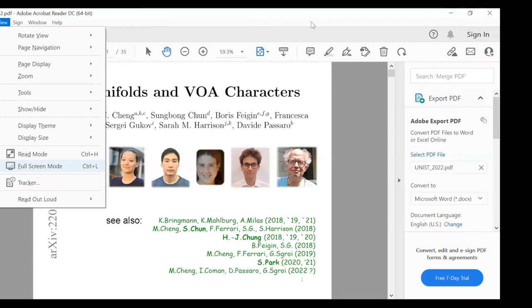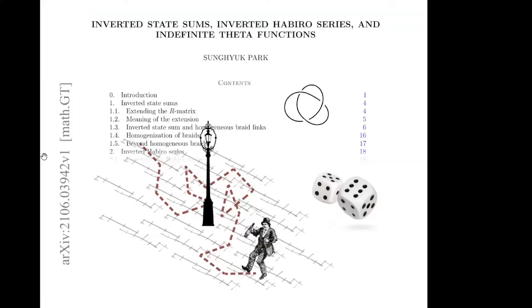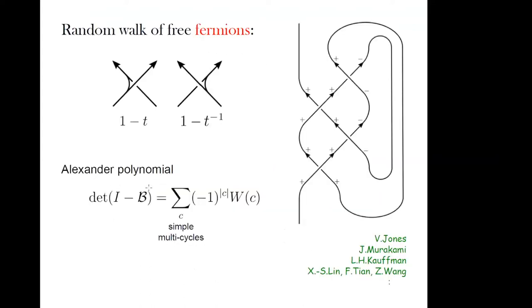I'm going to start with another work by Sung Park, where he provided a very interesting generalization of a random walk model on a diagram of a knot. The input data is very geometric - it's diagrammatic - but then we're doing some kind of statistical physics, or a statistical model, by rolling the dice. Suppose you have a knot diagram like the one shown on the left.